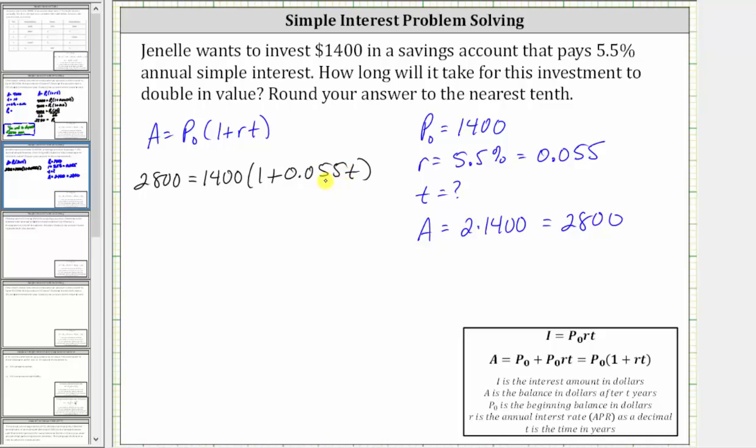And now we need to solve this equation for T. To solve for T, we could distribute 1,400, but because we do have multiplication here, let's divide both sides by 1,400 instead.